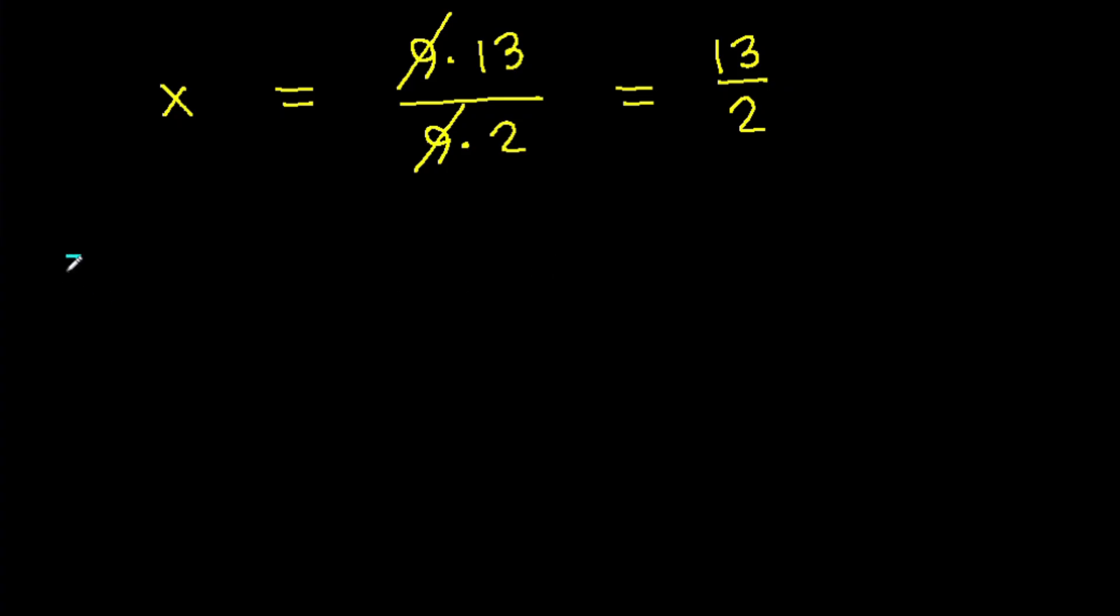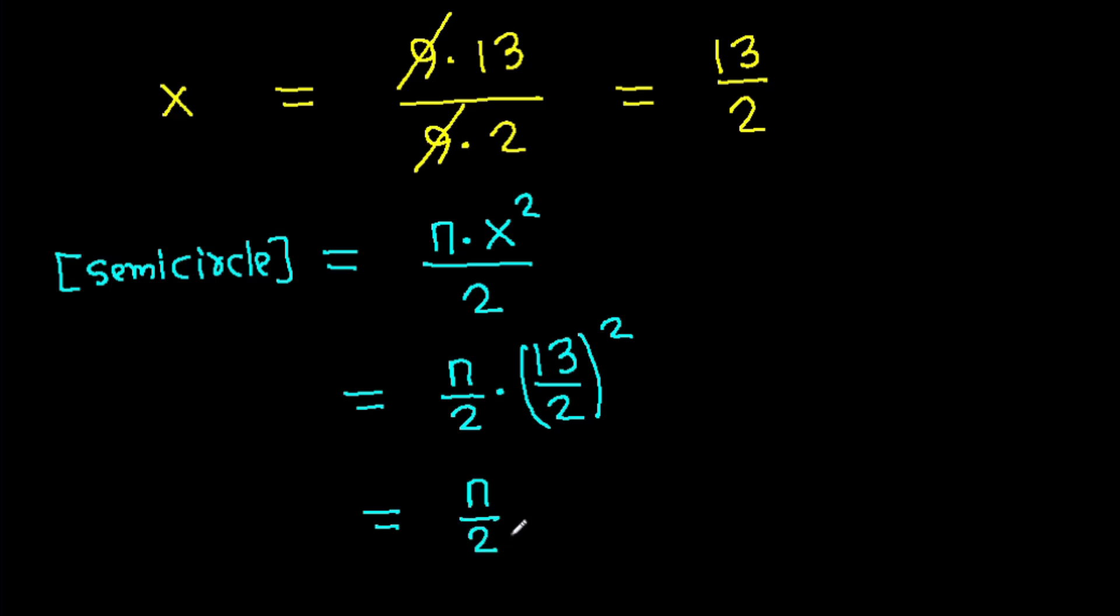And area of semicircle will be pi times radius is X squared over 2. And it is pi over 2 times X is 13 over 2 squared. And it is pi over 2 times 169 over 4. That will be 169 pi over 8.